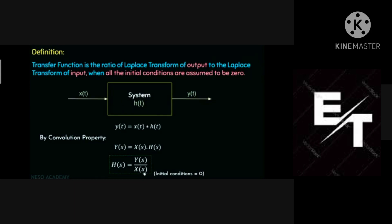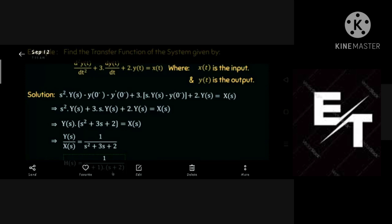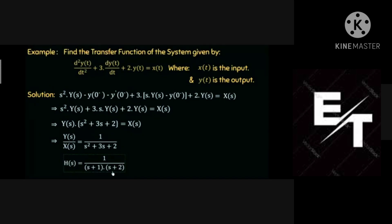The transfer function H(s) equals Y(s) divided by X(s), where Y(s) is the output and X(s) is the input, with all initial conditions zero. Now after the transfer function definition, we have an example problem: find the transfer function of the system given by d²y(t)/dt² + 3·dy(t)/dt + 2·y(t) = x(t). This is a time-domain differential equation that must be converted to the s-domain using Laplace transform.